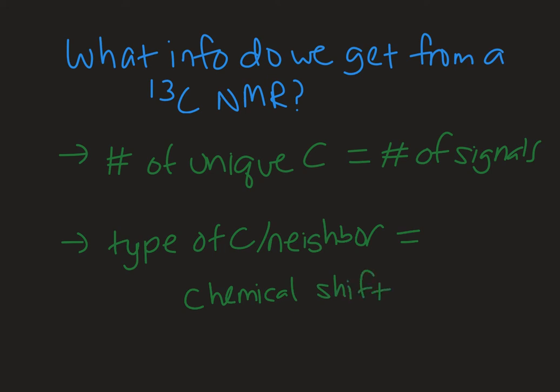The chemical shift range for carbon-13 is quite a bit bigger, zero to 200 ppm as opposed to zero to about 12 for proton NMR. But the principles regarding chemical shift are the same. We'll have another in-depth video on chemical shift and an additional one on the number of signals to expect.